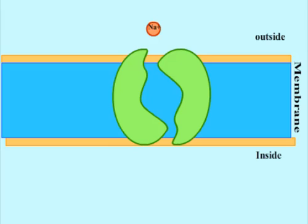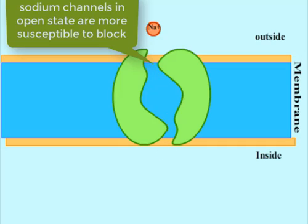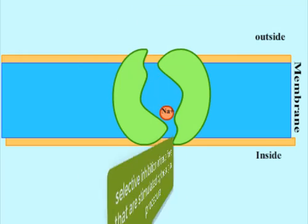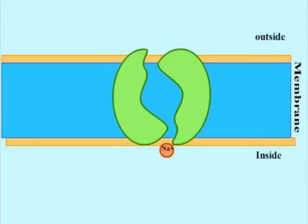Local anesthetics have a greater affinity for sodium channels of nerve fibers that are firing or in an active state. The sodium channels in the open state are more susceptible to block than the closed ones. This causes a selective inhibition of nerve fibers that are stimulated by the surgical procedure.